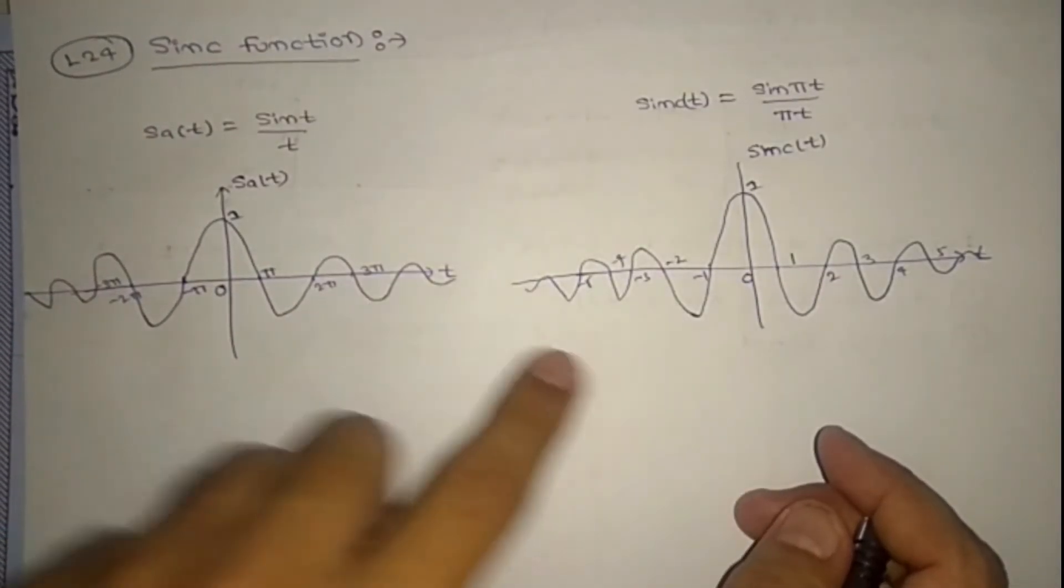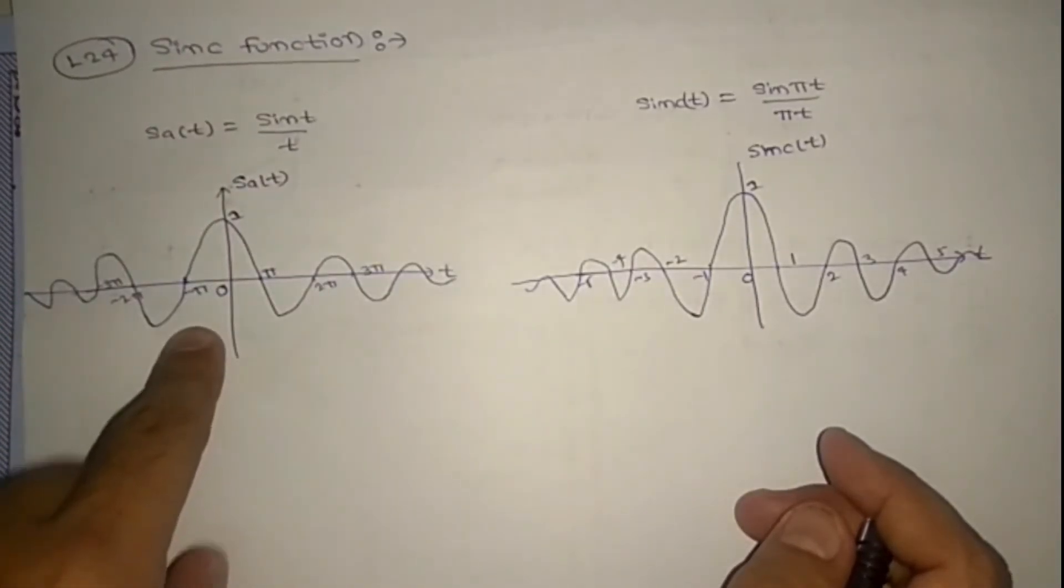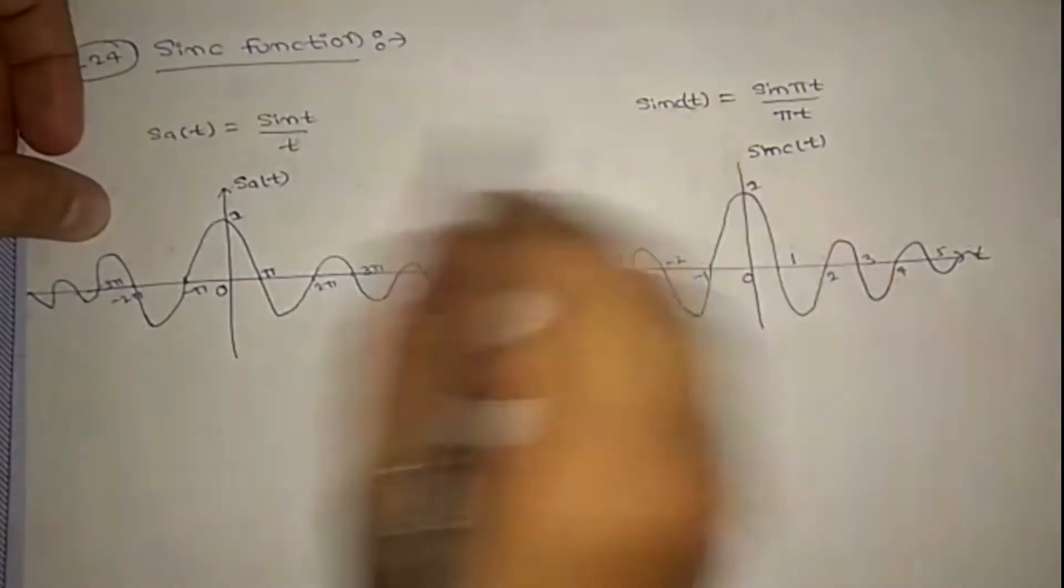It will be in pi, 2 pi, 3 pi, here minus 1, minus 2, minus 3. So these two are different. This is saw function, this is sinc function. So what is the relation between these two?